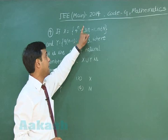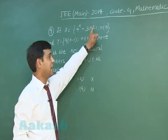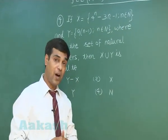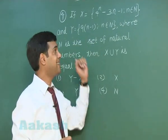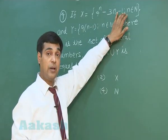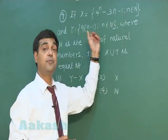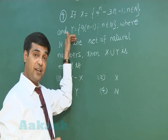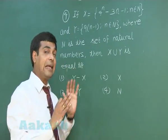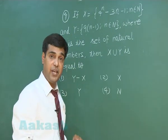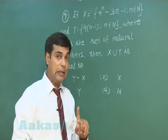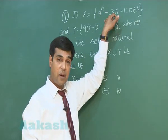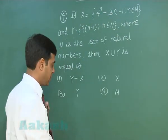For capital X, given as 4 to the power n minus 3n minus 1, we have two possibilities: one, we can start substituting values for n as 1, 2, 3 and so on in both X and Y; or we can start using the binomial theorem on 4 to the power n. I am starting with the second option.